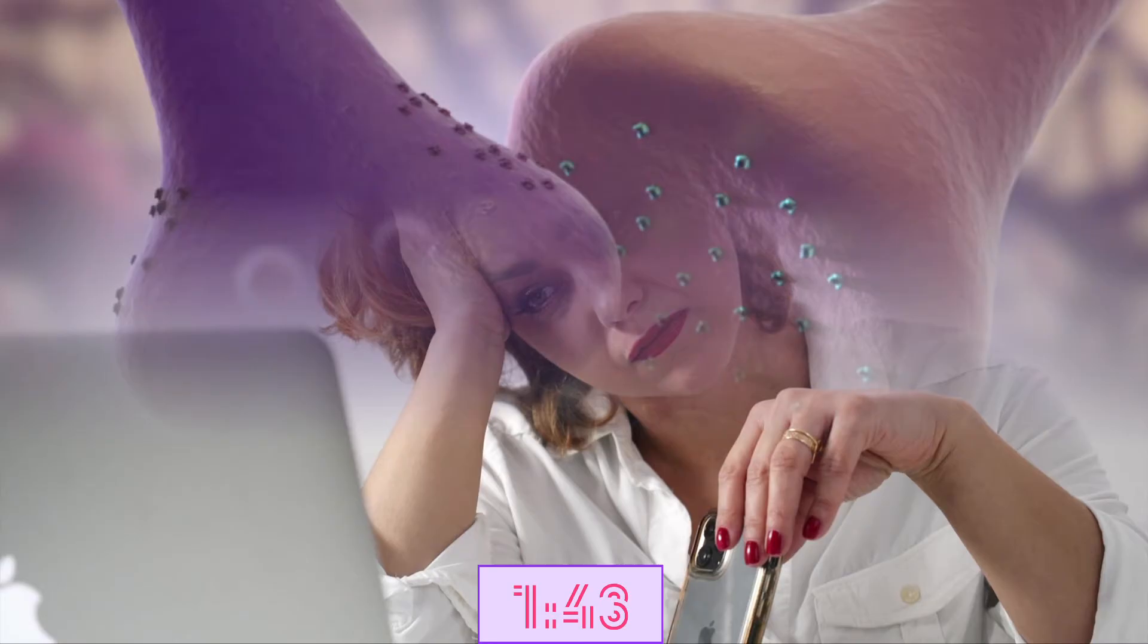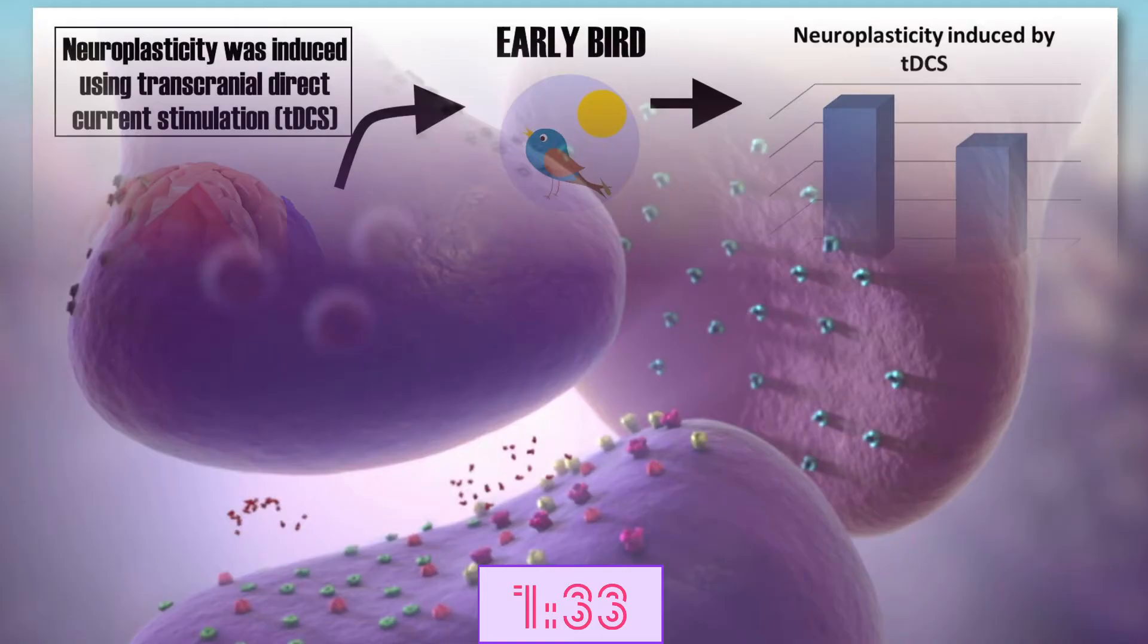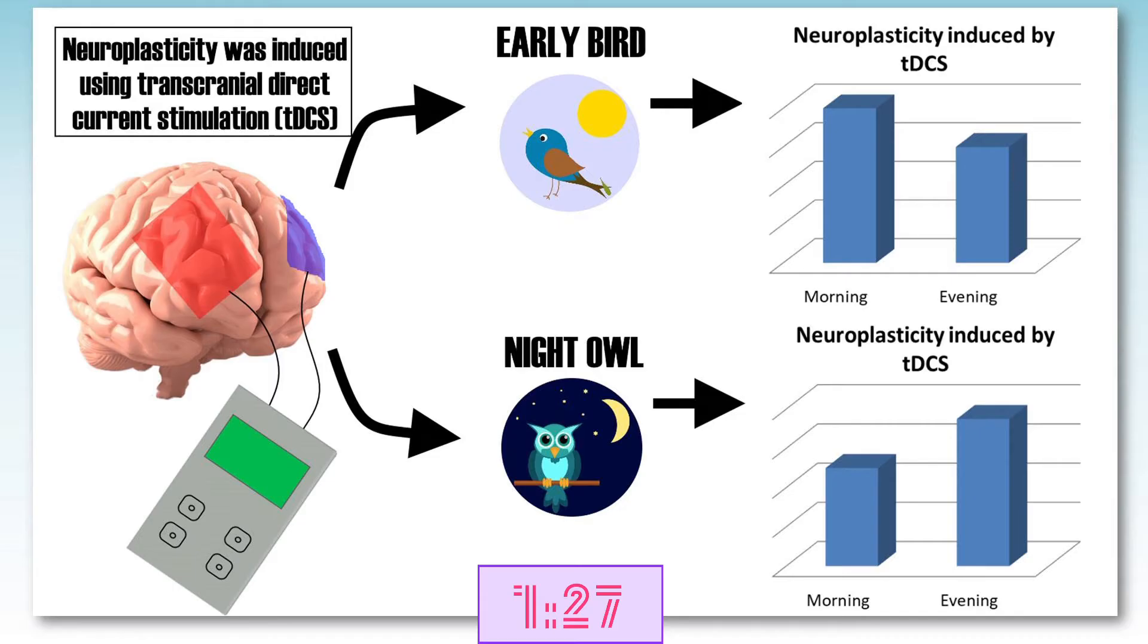Next, they looked at neuroplasticity, which is the ability of the brain to make stronger connections between brain cells, which is crucial for learning. The ability of the brain to make plastic changes was stronger in accordance to an individual's preferred time. This suggests that the ability to learn is easier in the morning for a morning person, whereas learning is easier in the evening for a night owl.